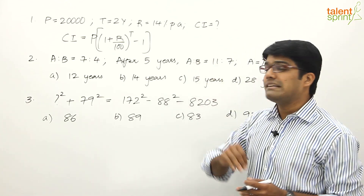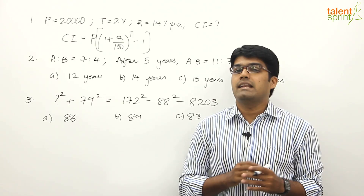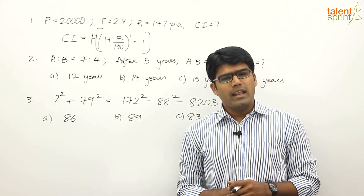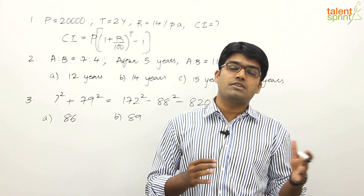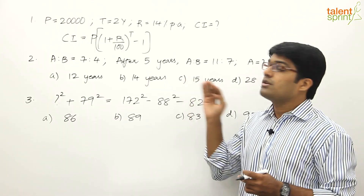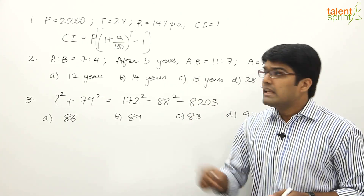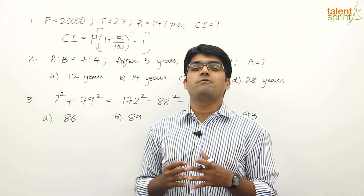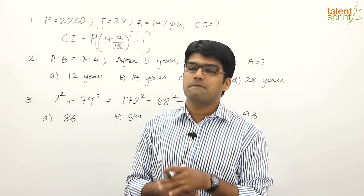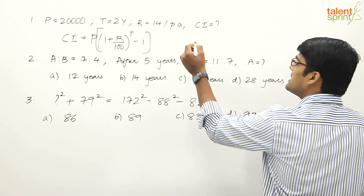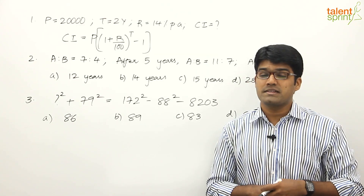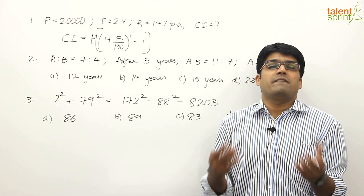So what is the second method? Instead of the traditional approach, we use basic fundamentals without the conventional formula. If you are strong in percentages, you'll know that compound interest can be calculated using the concept of effective percentage: effective% = a + b + (ab/100), where a and b are two percentages. Compound interest is an effective percentage case.